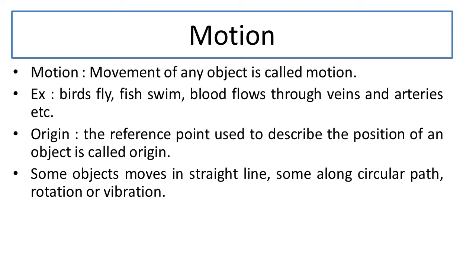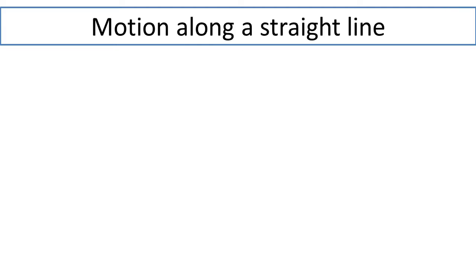Some objects may move in a straight line, some may move along a circular path, some may rotate, and some may vibrate. Any object can have a combination of these. That means motions can have different types. In today's video, we will talk about objects that move in a straight line — motion along a straight line — which is called the simplest type of motion, because everything is on a linear scale.